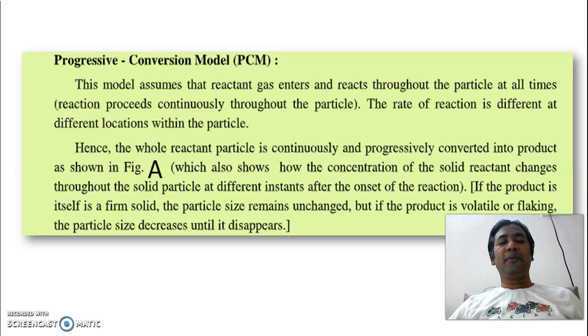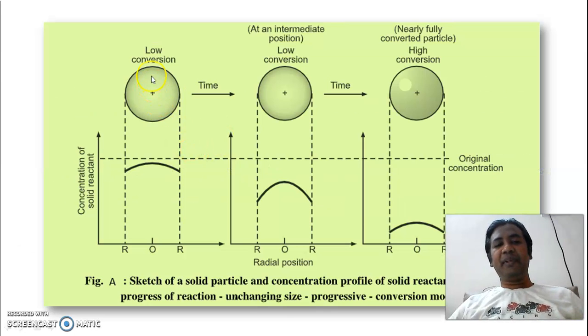Now let us discuss more about PCM. This model assumes that the reactant gas enter and react throughout the particle at all the time. The rate of reaction is different at different locations. Let me show you diagrammatically. This is the original particle. This is its original concentration of that reactant B. Now, as the time progresses and as this reactant B is reacting with A, you can see the particle is occupying more space. This decrease in the concentration takes place. You can see this dome represent initial concentration and there is a decrease in initial concentration of reactant B.